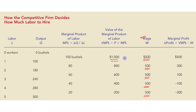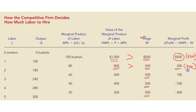If we talk about the first worker: the first worker generates revenue of $1000 and the wage the firm pays is $500. Revenue greater than wage means profit = $1000 − $500 = $500, which is positive. So hiring the first worker is profitable. The second worker generates $800, wage is $500, profit = $300 — positive, so hiring the second worker is also profitable. The third worker generates $600, wage is $500 — still profitable.